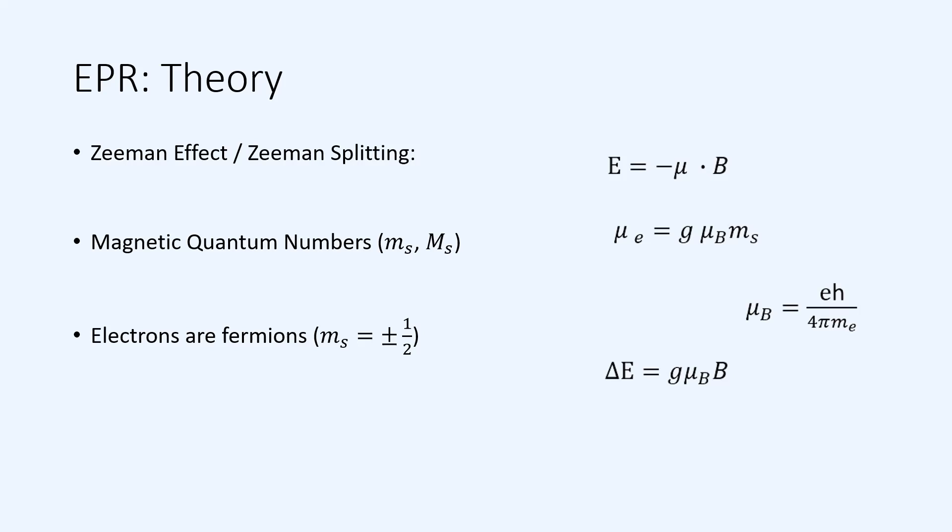Taking all these ideas together means that the change in energy from an electron, or any fermion, which is parallel and anti-parallel to an external magnetic field, can be summarized by the bottom equation. This change in energy is equal to the magnetic field times the Bohr magneton times the lambda-g factor, something we hope to measure in our EPR measurements and experiments.